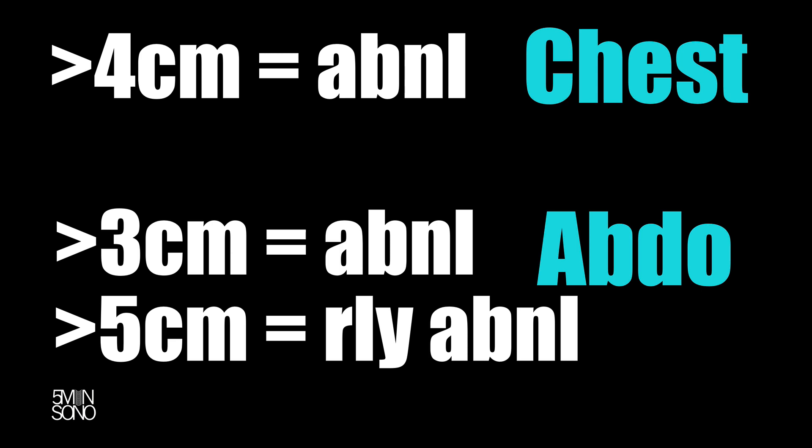To recap: anything greater than about four centimeters in the chest is considered abnormal — there's a range, and you should correlate it with the patient's body surface area if they're on the borderline. For me, if I'm going to remember one number, it's about four centimeters, but it can be up to four and a half centimeters in patients with a large body surface area. In the abdomen, anything greater than three centimeters is considered abnormal, and anything greater than five centimeters is considered very abnormal.